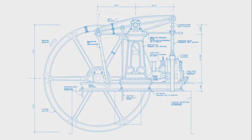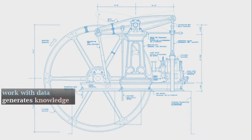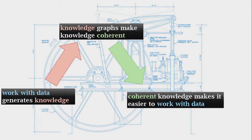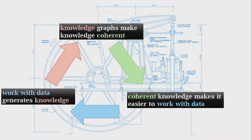This is a flywheel. Working with data is what actually generates knowledge, and making that knowledge coherent is exactly the same thing as building a knowledge graph. Coherent knowledge makes it easier to work with data. If you get these things working in concert, you get a virtuous cycle — the act of people working with data, doing analytical work, generates knowledge which you make coherent, which makes it easier to work with data, which expands the footprint of people meaningfully working with data and contributing back.